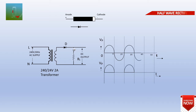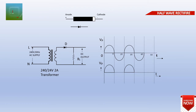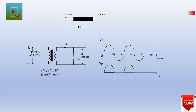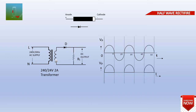This is the negative half cycle. If you want to add the positive half cycle, the diode will be connected to produce the output waveform. Now let's continue.